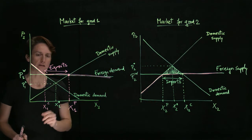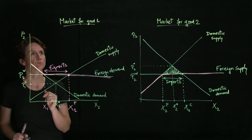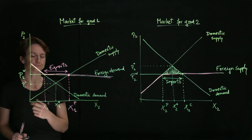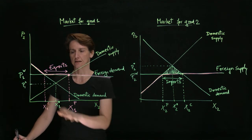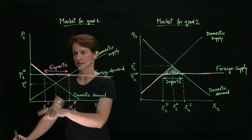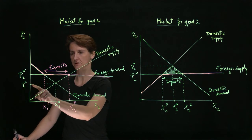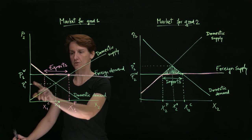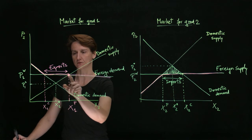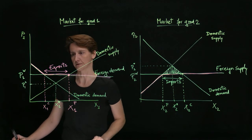In the other case, if we're looking at the market where this country is an exporter, then producer surplus increased from this initial area to this new one. So domestic producers are much better off.